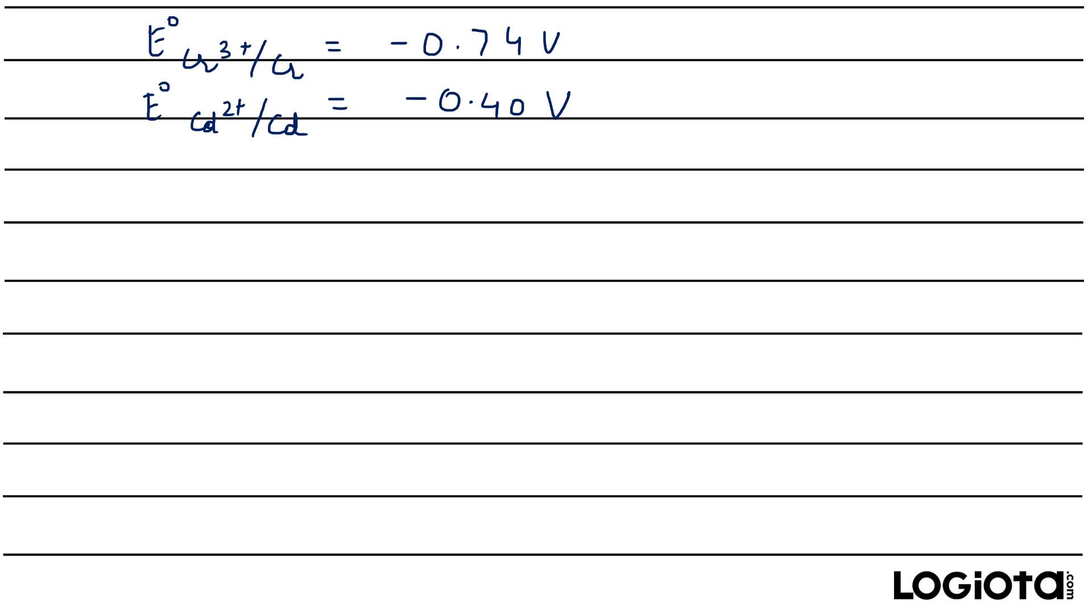Now how can you predict which one is cathode or which one is anode? First you need to compare both values. In these both values you can see that for cadmium it is more and for chromium it is less.